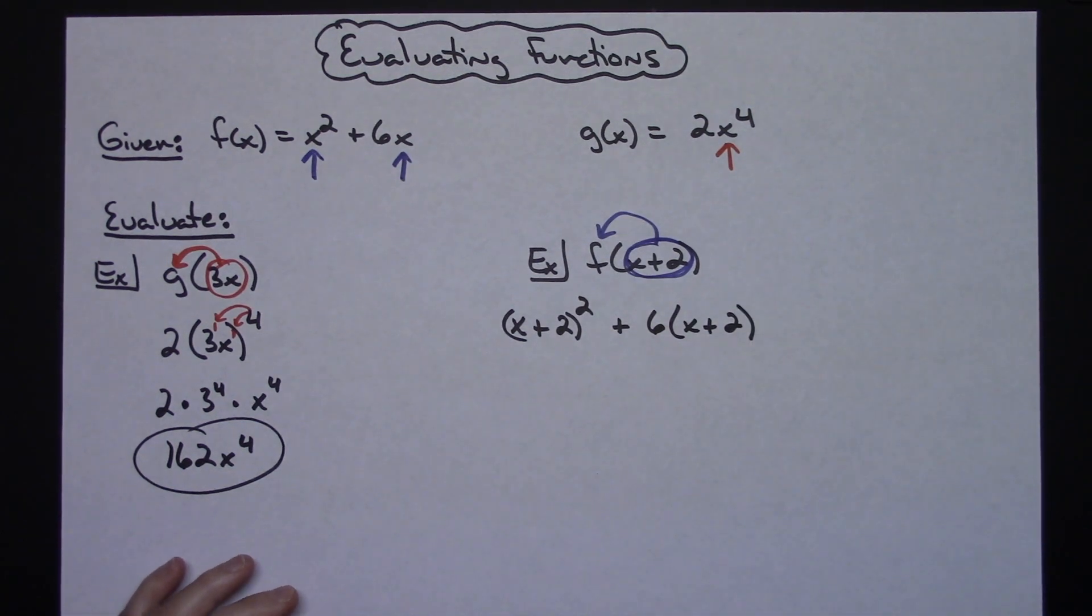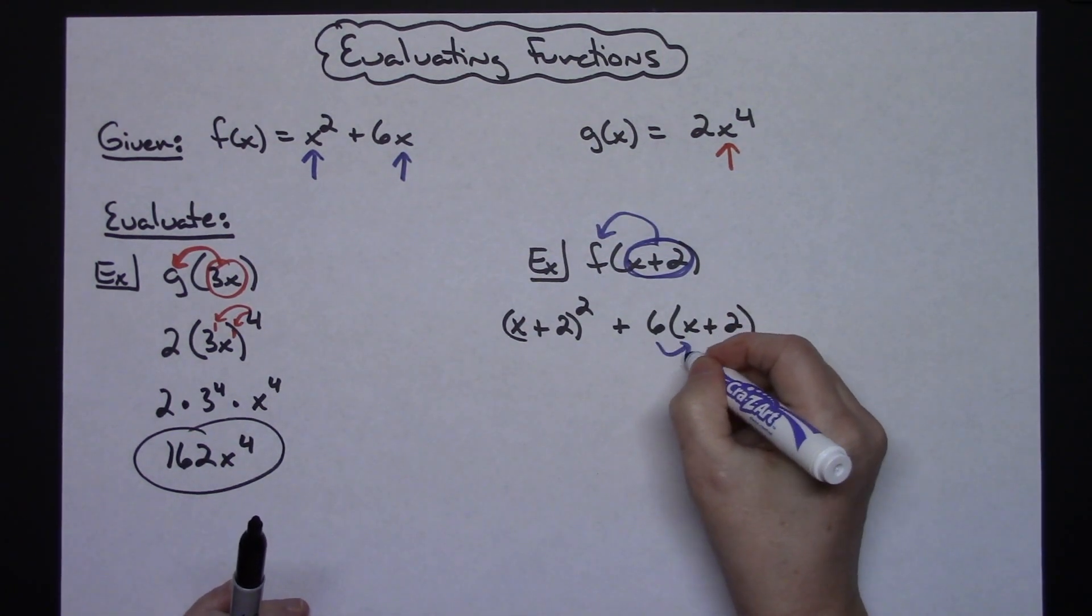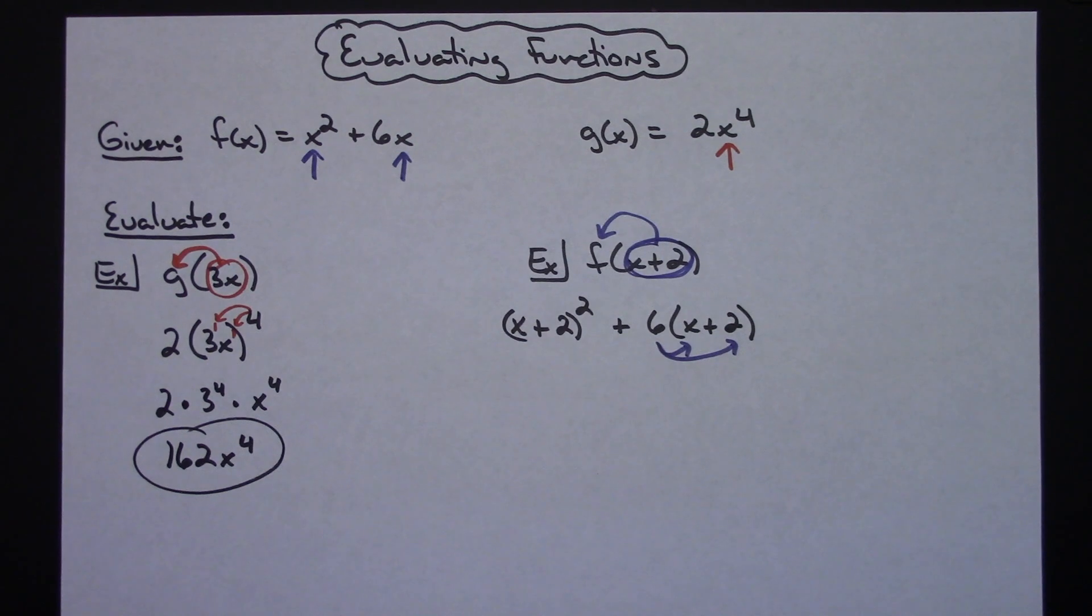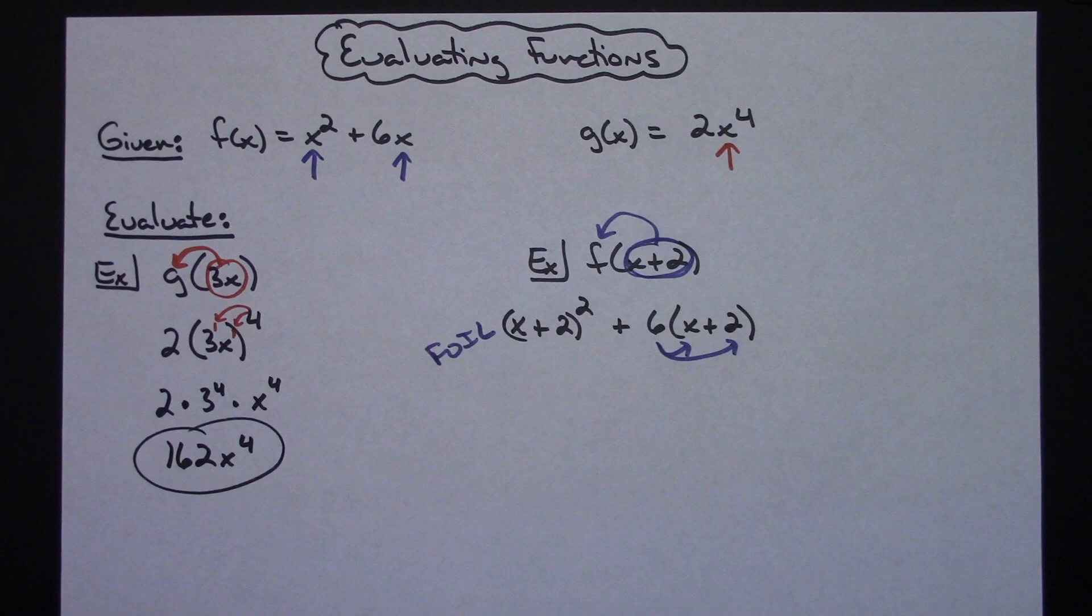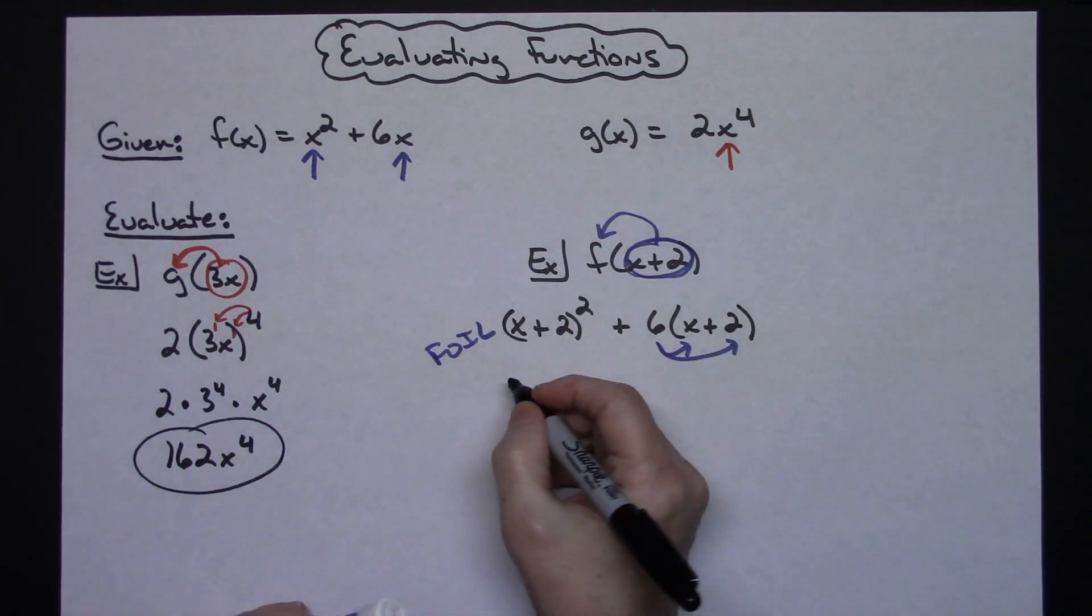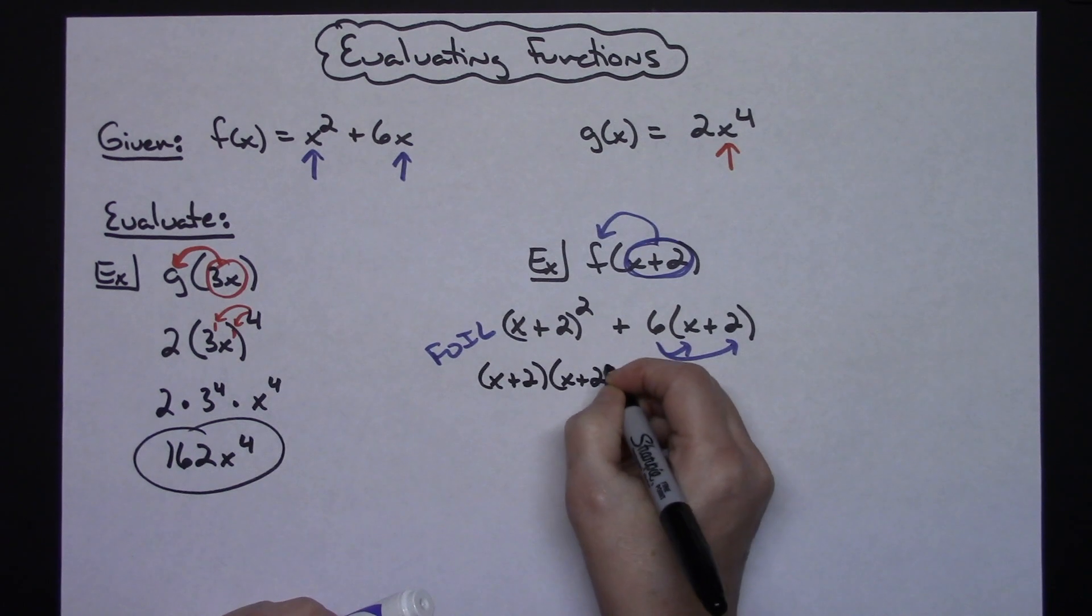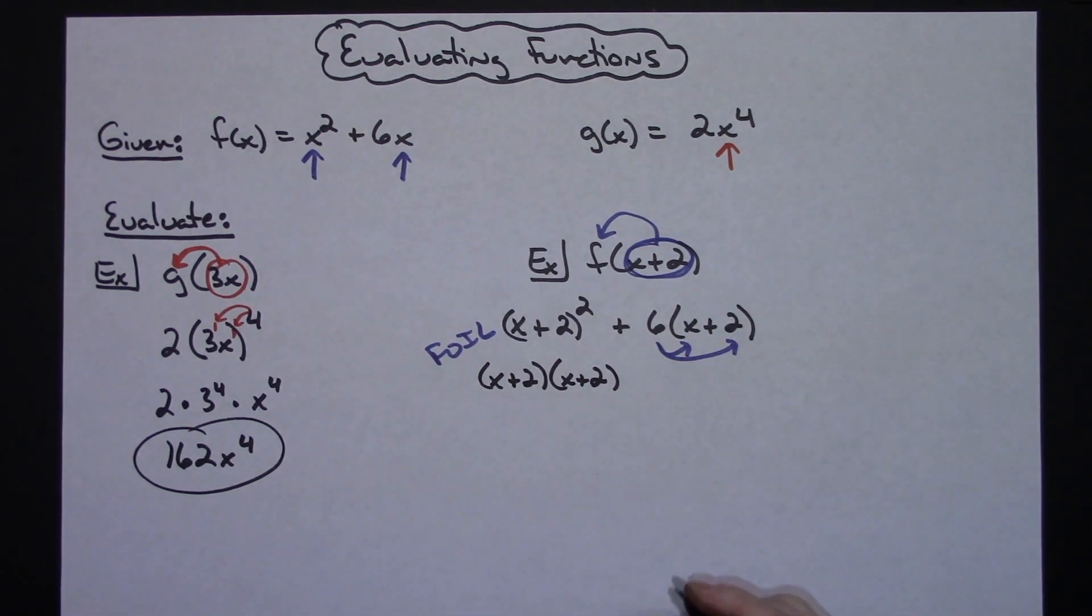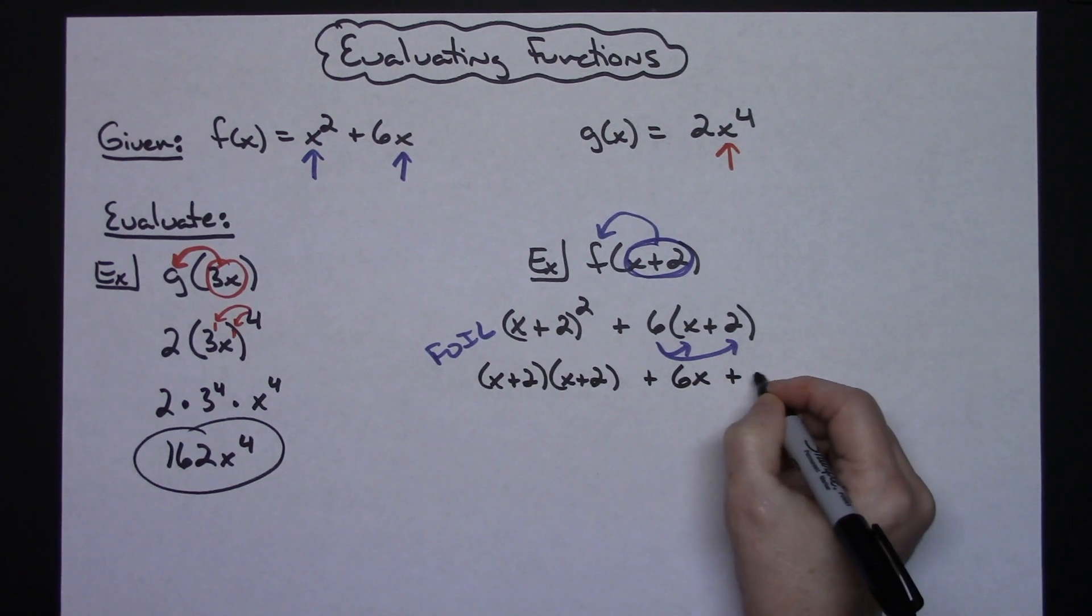At this point it's just a matter of distributive property, FOIL, and simplifying this out. I'll distribute the 6 here and I'm going to do FOIL here. If you need to rewrite this binomial side by side so you can see the FOIL, that's okay - (x+2) times (x+2). I'll distribute and have 6x plus 12.